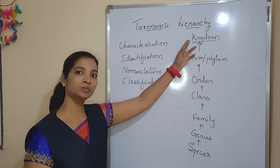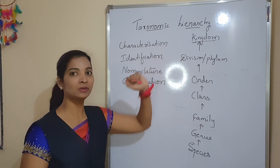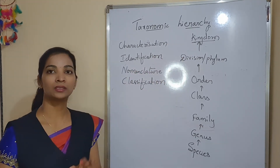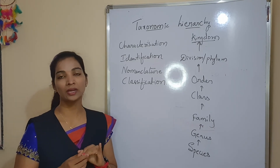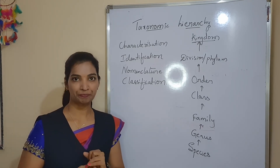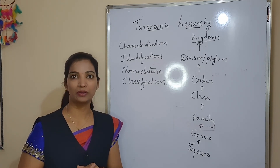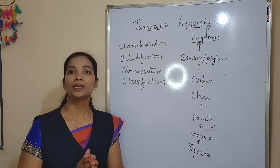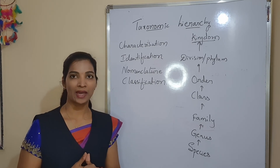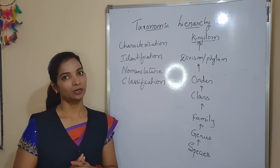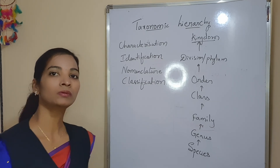Kingdoms grouped together make up domains. There are three domains: Archaebacteria, Eukaryota, and the prokaryotic bacterial class. So that covers the taxonomic hierarchy and their arrangement. I hope you understood. Thank you.